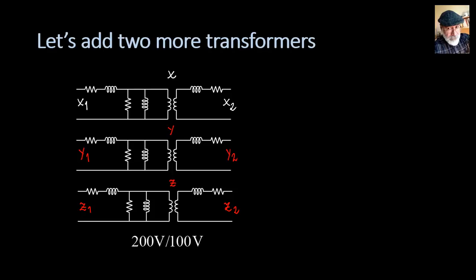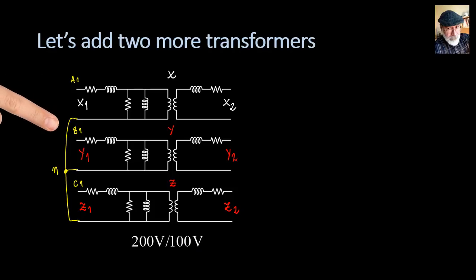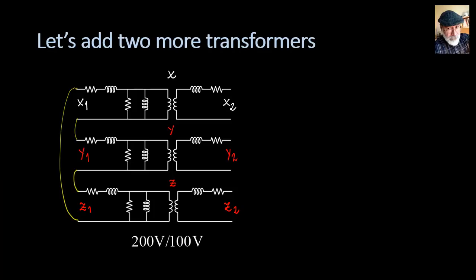Each one of those single-phase transformers has a ratio of 200 to 100 volts. Let's connect the primaries in a Y — a star — and feed the three transformers from a three-phase system like A1, B1, and C1. We could also connect the primaries in a delta and connect that delta to a three-phase system of voltages A, B, and C of the primary.